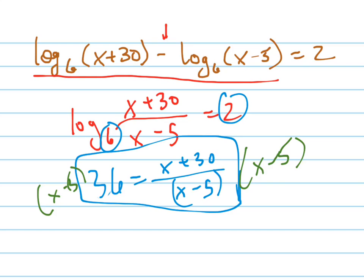And when I do that, those cancel out. You get 36x minus 180 equals x plus 30.